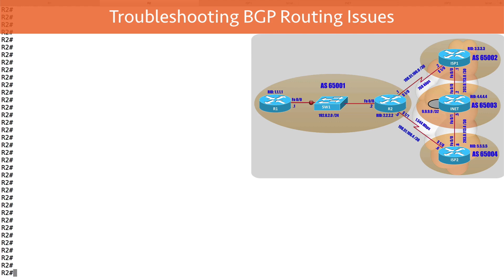We had a 10 meg link out to one ISP and a T1 (1.544 Mbps) link out to another ISP, with a BGP peering relationship with each. Unfortunately, by default we were using the lower speed T1 link because that ISP was closer to the internet backbone — fewer autonomous system hops. To fix that, we had to do BGP path attribute manipulation. In this topology on screen, router R2 has a 768k connection to ISP1 and a 1.544 Mbps connection to ISP2. We prefer to use ISP2.